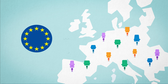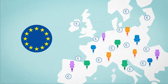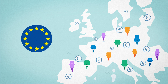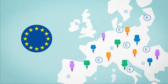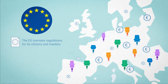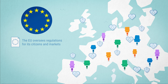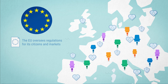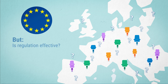Out of the many projects financed by the European Union, some are more effective than others. Choosing the most effective ones is important to give good value for money for the European taxpayers. The EU also oversees regulations that aim to protect its citizens' health and safety and improve the functioning of the single market. But is regulation effective?